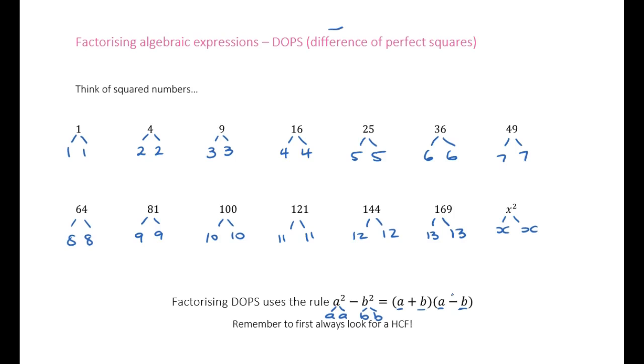Now, in order to know whether we've factorized something correctly, you can always check by expanding something out and making sure you get what you started with. So I'm going to show you why this works. But keep in mind, when we ask you to factorize something with DOPS, this here is your final answer. Over here, I'm just going to show you how it works. In order to expand this, we need to FOIL like we have in previous lessons.